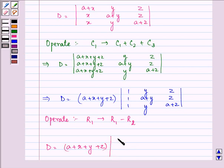here it will be 0. Here it will be y minus a minus y that gives us minus a, here z minus z 0. Remaining will be same.